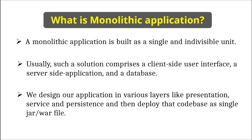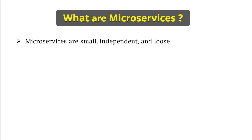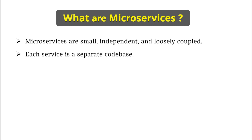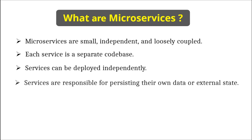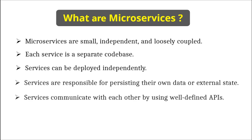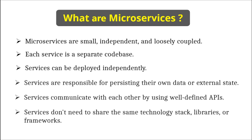What is microservices? Microservices are small, independent, and loosely coupled — each service is a separate code base. Services can be deployed independently. Services are responsible for persisting their own data or external state. Services communicate with each other by using well-defined APIs. Services don't need to share the same technology stack, libraries, or framework.